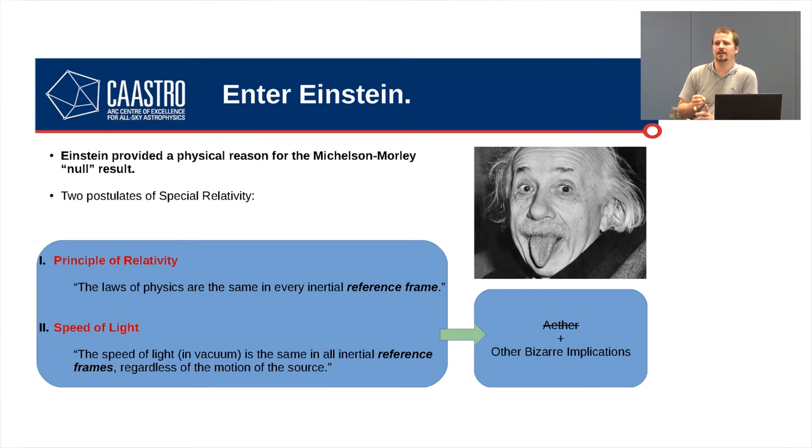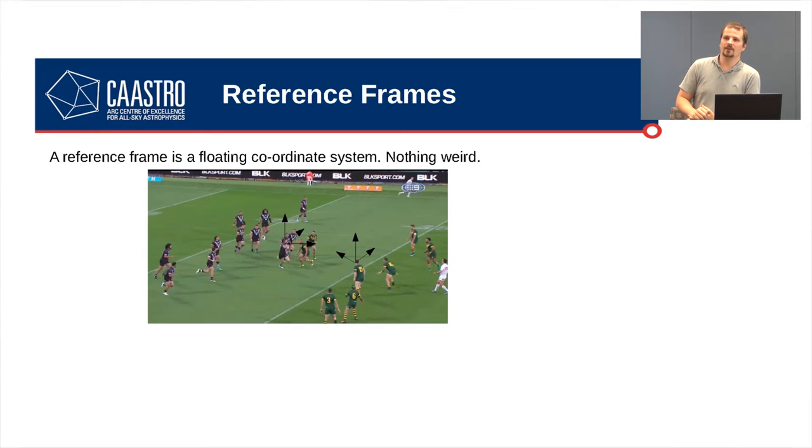The first postulate is the principle of relativity. And this says that the laws of physics are the same in every inertial reference frame. And the second one says that the speed of light in a vacuum is the same in all inertial reference frames, regardless of the motion of the source of that light. And what we'll do is we'll go through each of these postulates in turn and see what they mean. And then we'll go through some of the implications of what comes out of those things. But first, there's actually a very important concept that we need to look at. And that is reference frames.